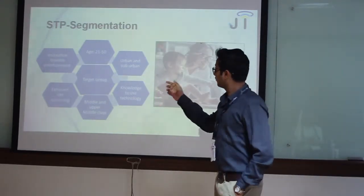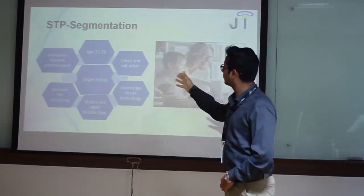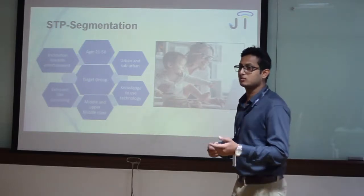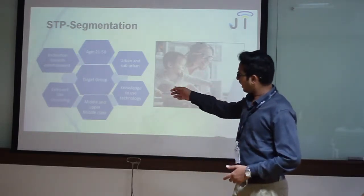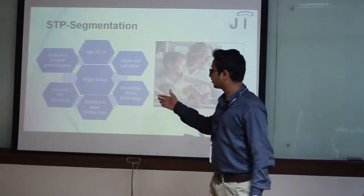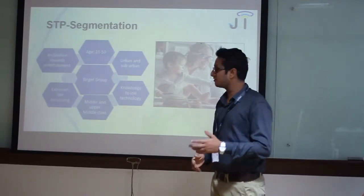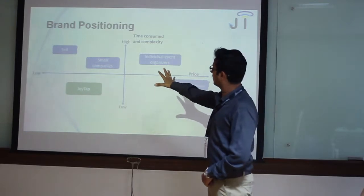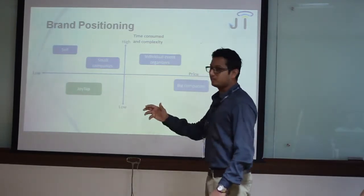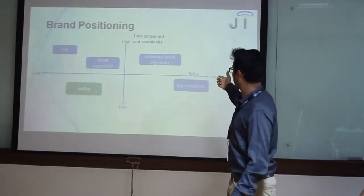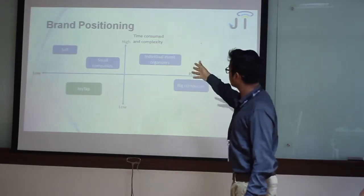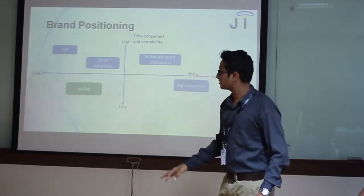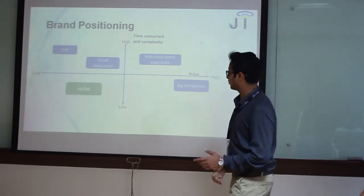The market segment we are targeting is mainly people with an age between 21 to 50. We are targeting the urban and suburban group who have knowledge to use technology — the person has to be well acquainted with smartphones. Demographic target is middle and upper middle class. Psychographically, we are looking for extroverts who are interested in socialising and handling social events, as well as entertainment. Our brand positioning is charted on time-consuming vs. price — these are the two main elements. Compared to small and big companies in the industry, we are positioned as less time-consuming and lower in price, as we are a one-stop solution for event management.